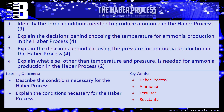That's everything you need for this video. Let's have a look at some questions to see how much you've picked up. The first one is a simple recollection of the three conditions needed to produce ammonia in the Haber process: your temperature, your pressure, and your catalyst. What temperature, what pressure, what catalyst?